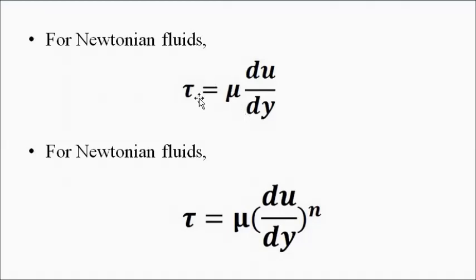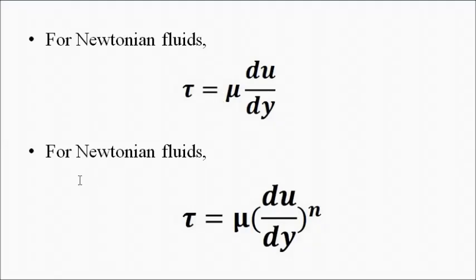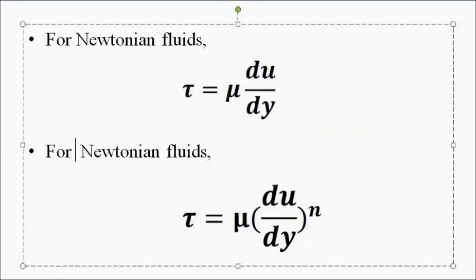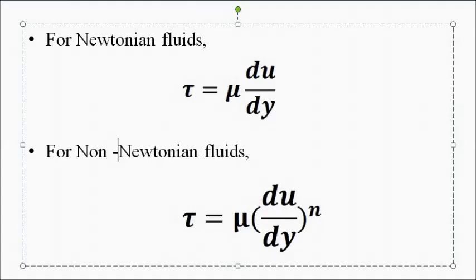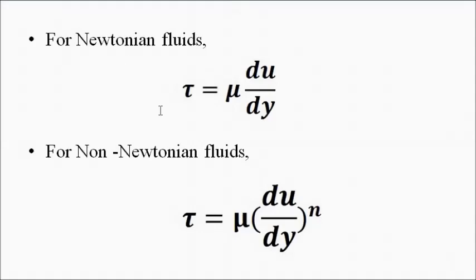For Newtonian fluids, the shear stress is proportional to the rate of change of velocity with respect to the separation distance. For non-Newtonian fluids the relationship is something like tau = mu × (du/dy)^n — a non-linear relationship. Note: by mistake 'Newtonian' was written there, but that formula is for non-Newtonian fluids. For Newtonian fluids it is the linear form; for non-Newtonian fluids it is this power-law form.